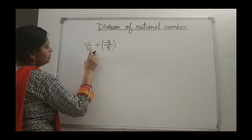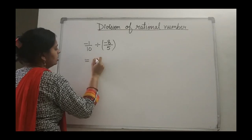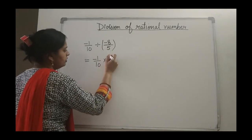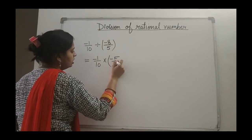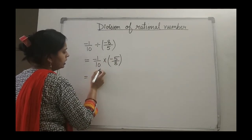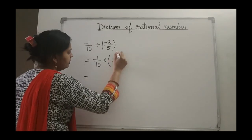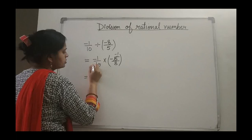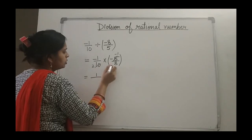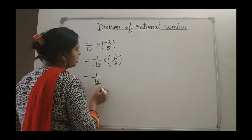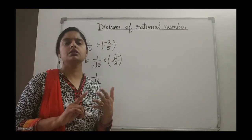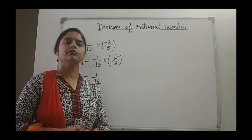One more example: minus 1 upon 10 divided by minus 8 upon 5. The dividend is multiplied by the reciprocal of the divisor. The reciprocal of minus 8 upon 5 is minus 5 upon 8. You can see numerator and denominator can be cancelled: 5 ones are 5 and 5 twos are 10, so cancel with minus sign; then minus 1 into minus 1 gives 1, and 2 eights are 16. The answer is 1 upon 16. Today we have done all the operations — addition, subtraction, multiplication, division of rational numbers. Go through the video properly. Thank you.